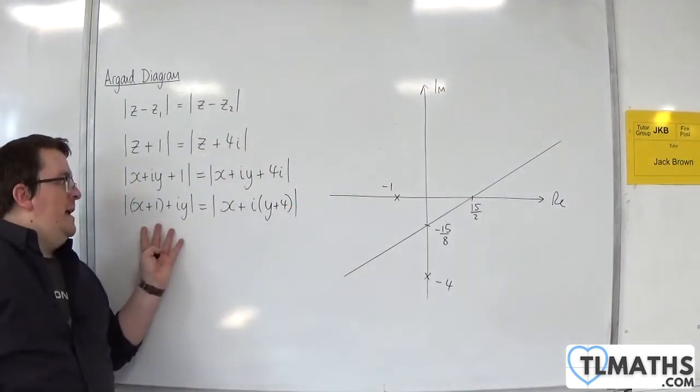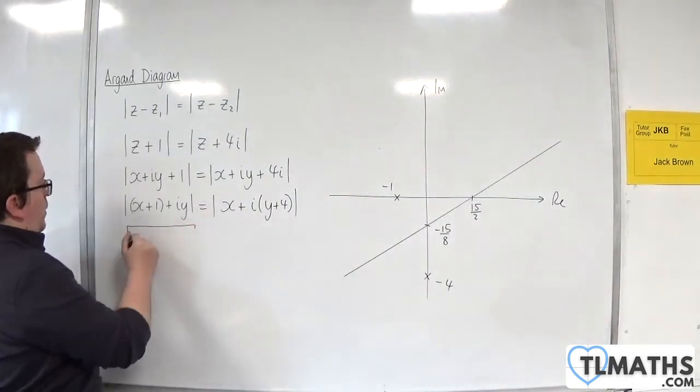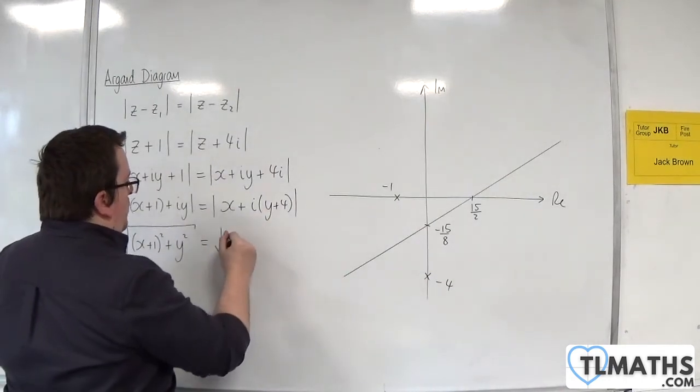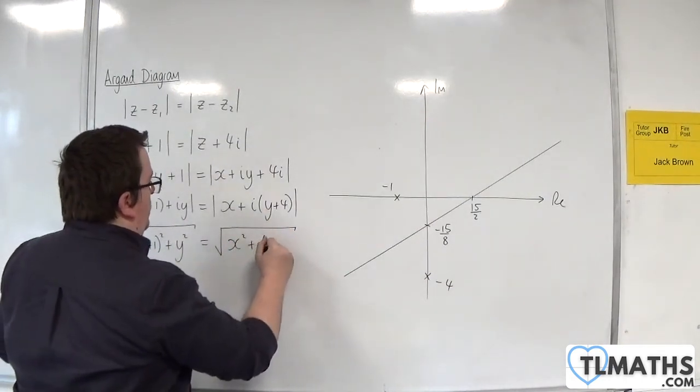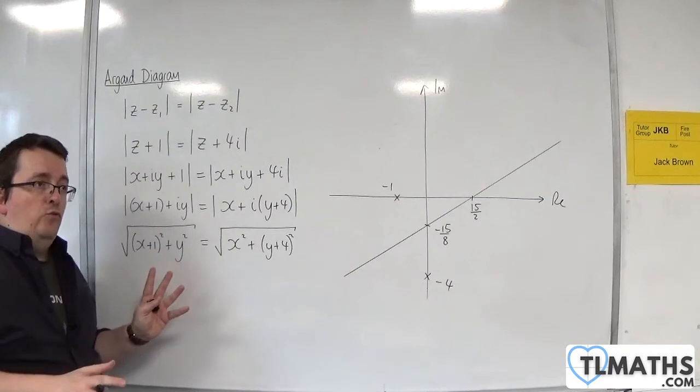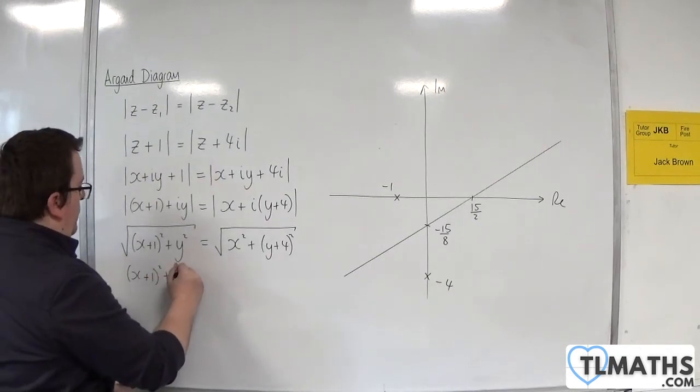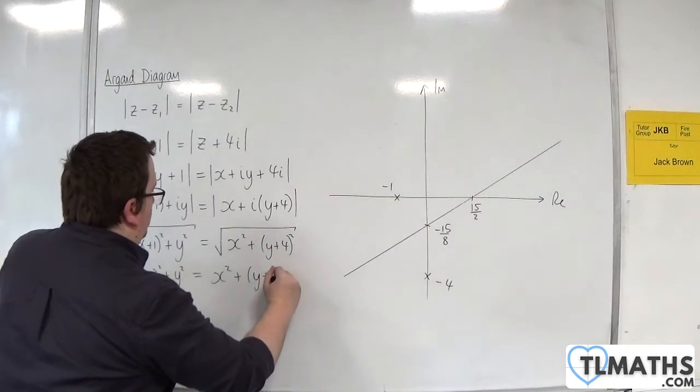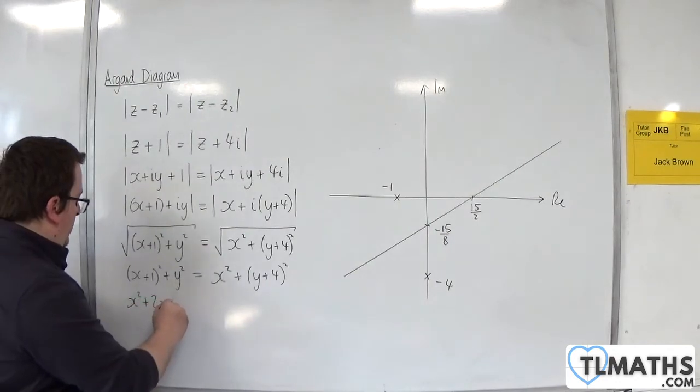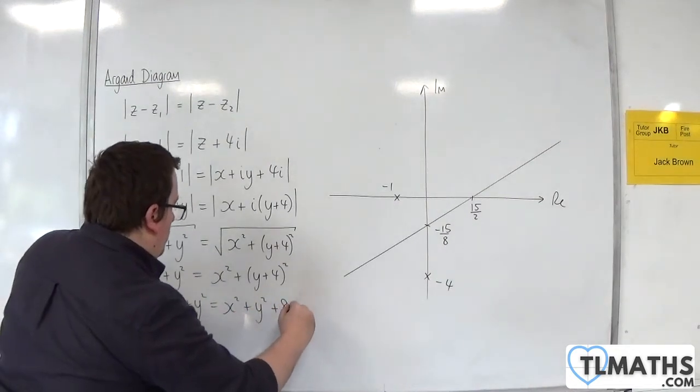The modulus of this complex number will be the square root of (x + 1)² + y², and the modulus of that one will be √(x² + (y + 4)²). Square both sides gets rid of the square roots: (x + 1)² + y² = x² + (y + 4)². Expand the brackets: x² + 2x + 1 + y² = x² + y² + 8y + 16.